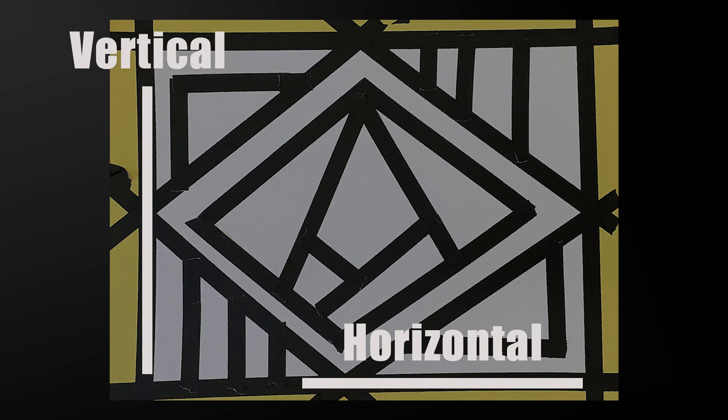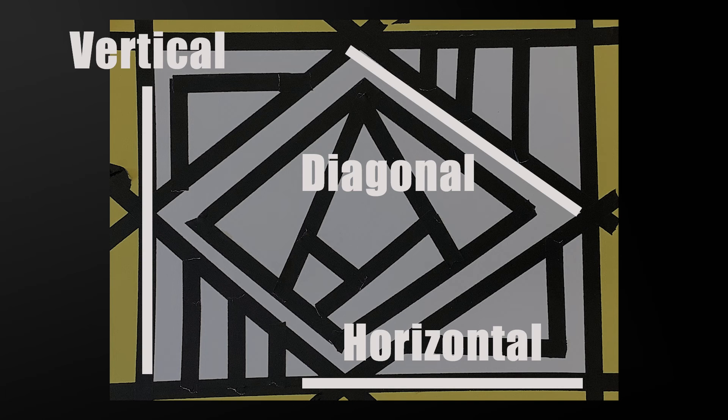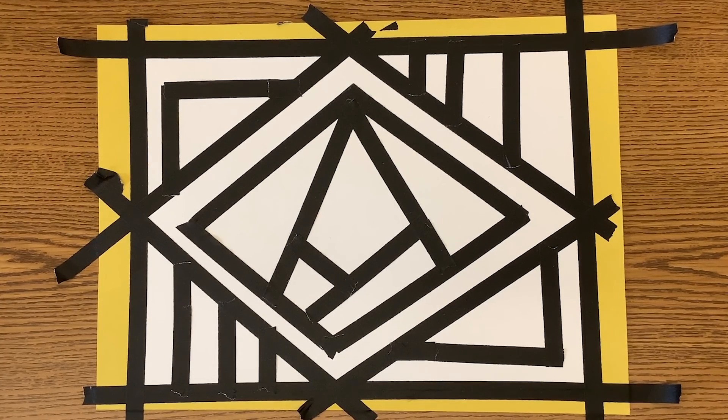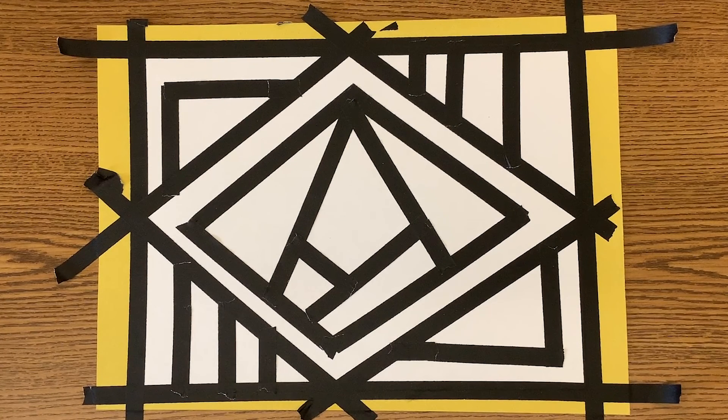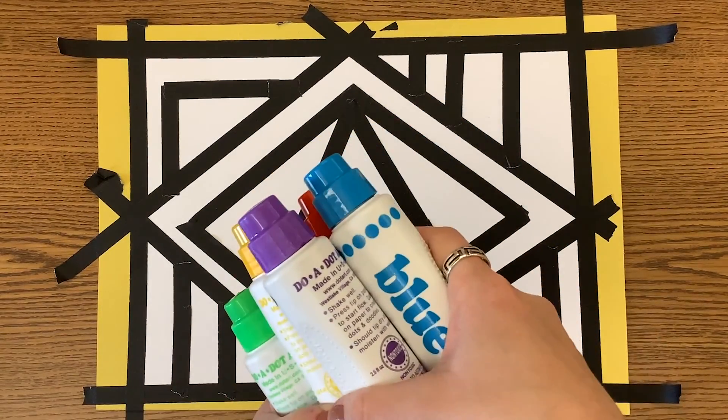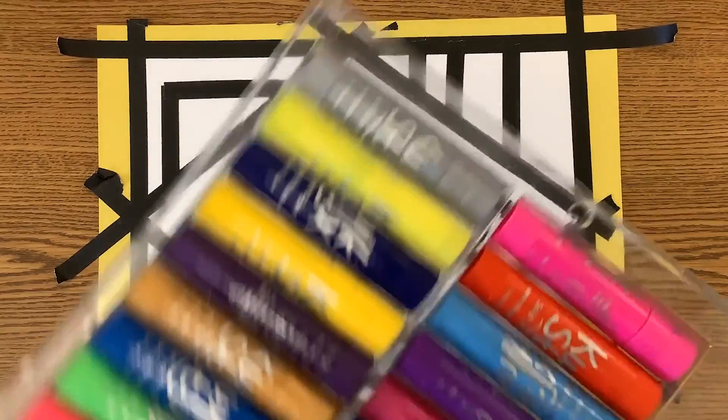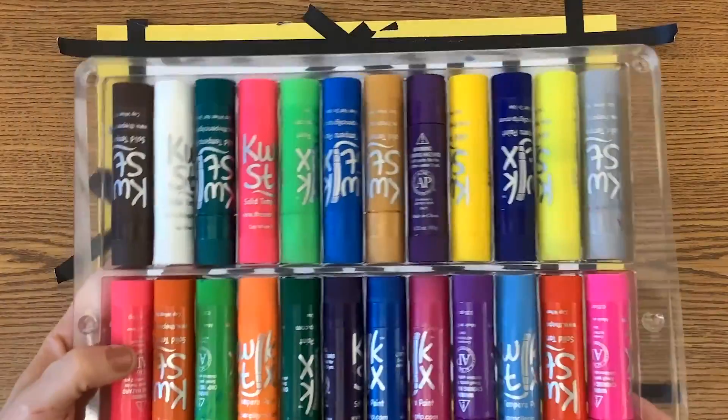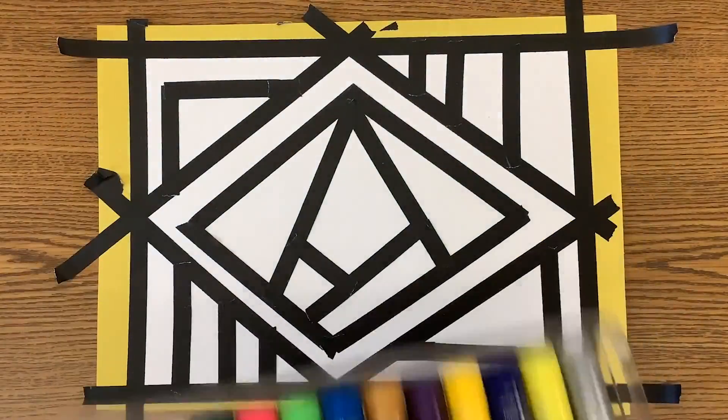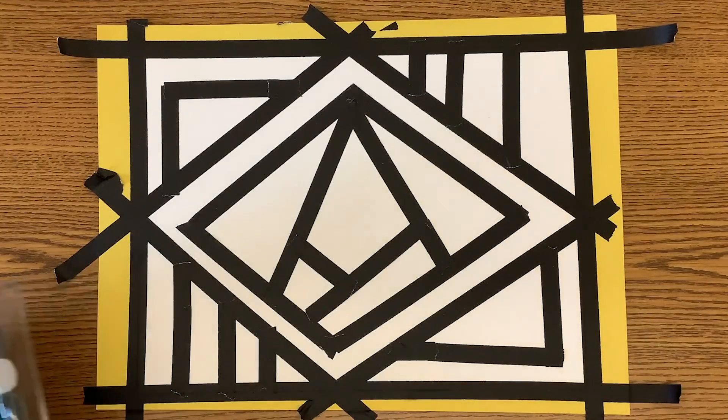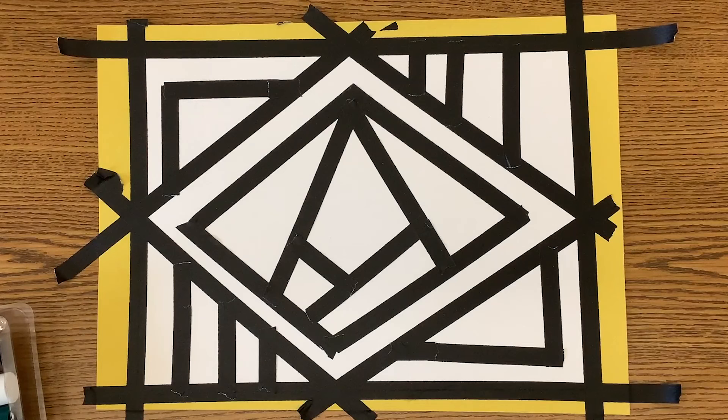Now that you're happy with your composition and how your piece looks, it's time to move on to coloring. We are going to be using do a dot paints and quick sticks to paint our project today. Pause the video, gather those supplies, and come on back when you're ready.